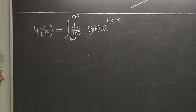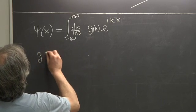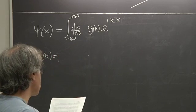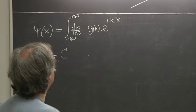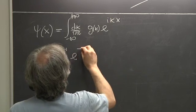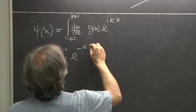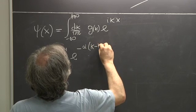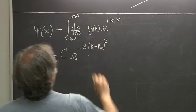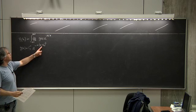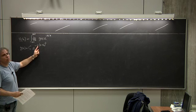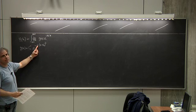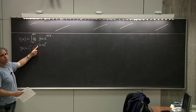In order to proceed with the calculation, we will make a choice for this g of k, and we will select it to be a Gaussian — some normalization constant times e to the minus alpha times k minus k0 squared. So it's a Gaussian centered around some wave vector k0, with a certain width of the Gaussian that depends on alpha — in fact, it's inversely proportional to alpha.